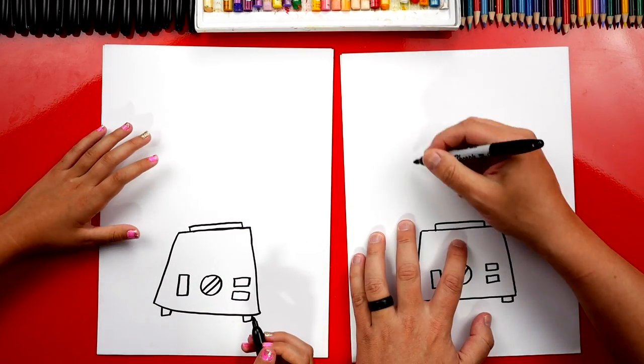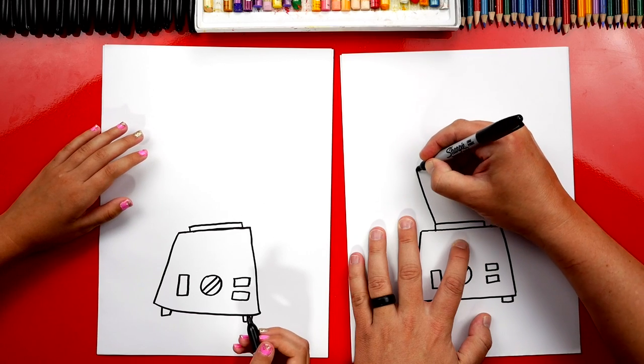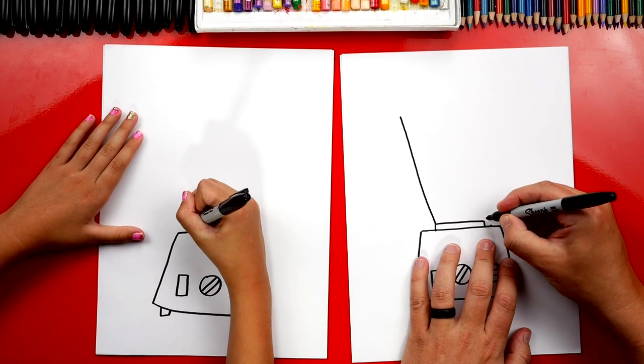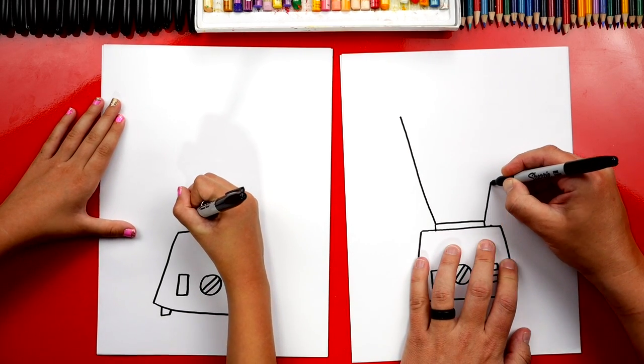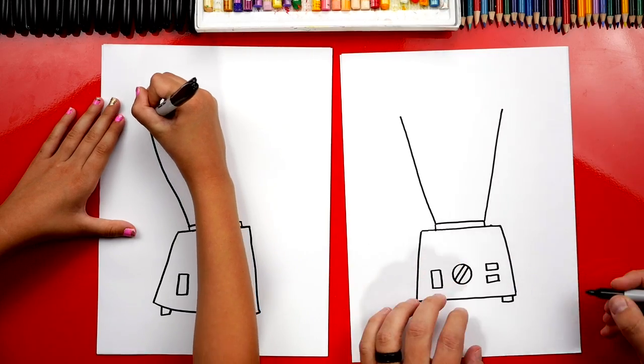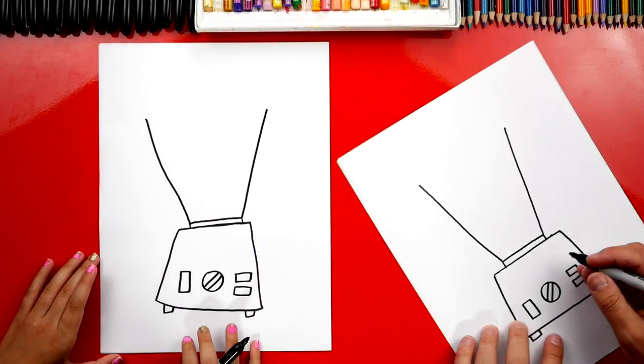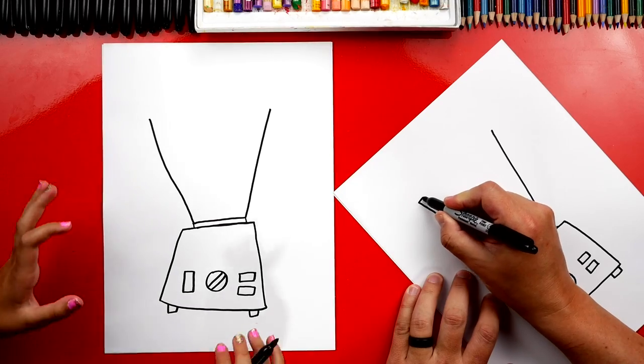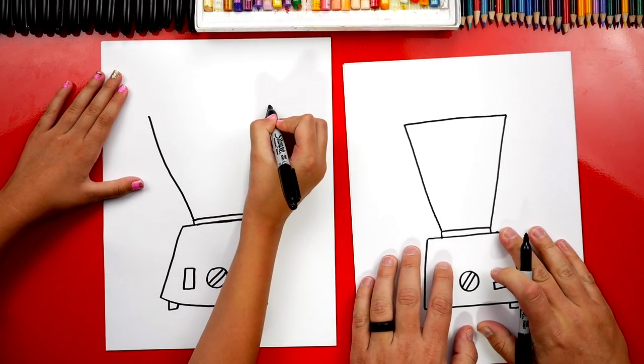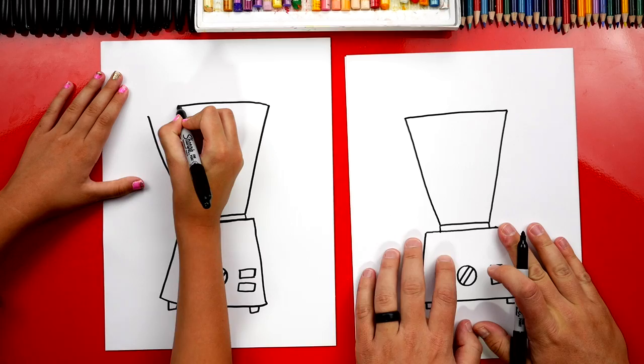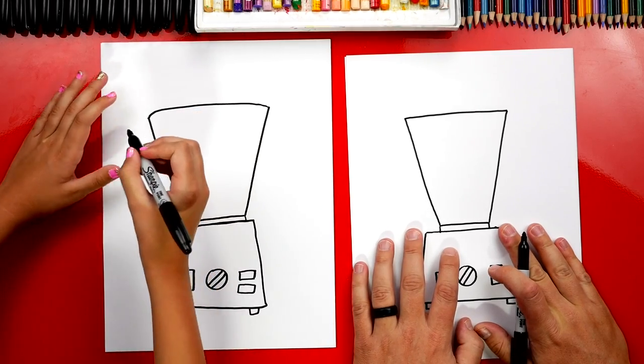And then let's draw the big glass part or the clear plastic part. I'm gonna draw a diagonal line going up to the left and also going up to the right. Then we can draw the top of our whatever this thing's called. I don't know a big pitcher. A big cup. Yeah a big cup.